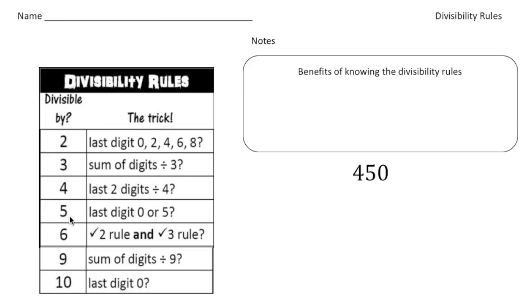So 2, 3, 4, 5, 6, 9, and 10. And you might be wondering why are we learning these rules? Well, the benefits of knowing about the divisibility rules are really two things. One is it saves time. And the big one is it helps you reduce fractions. When you learn how to multiply fractions, you're going to need to know how to reduce fractions. So this helps with the reduction of fractions.